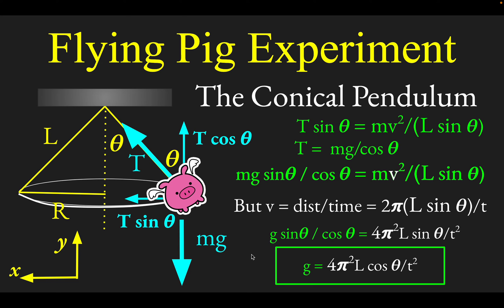This relationship tells you the acceleration due to gravity in terms of the length of your pendulum, the angle that you observe it to be kicked out at, and the time it takes to go around one time.